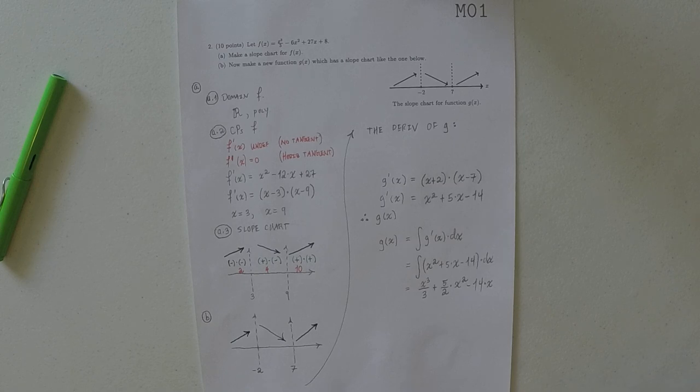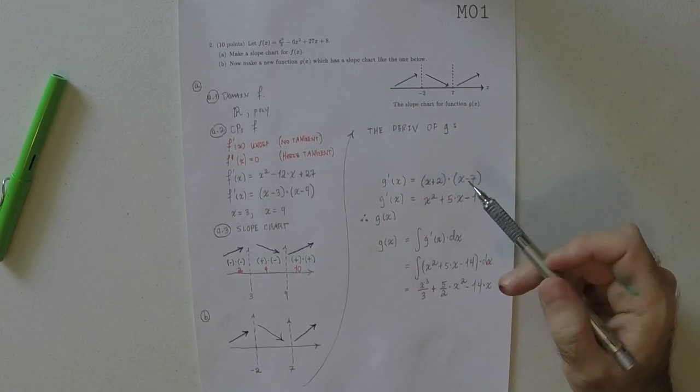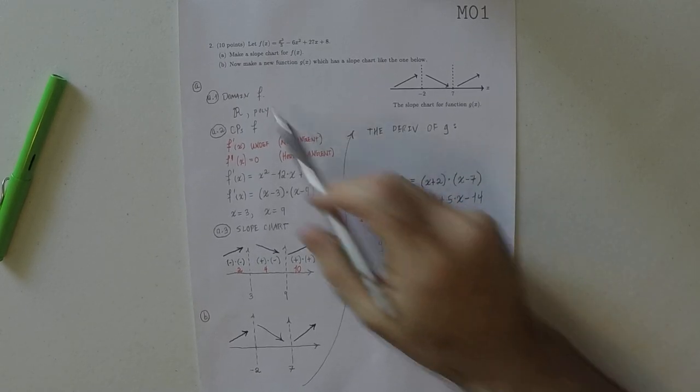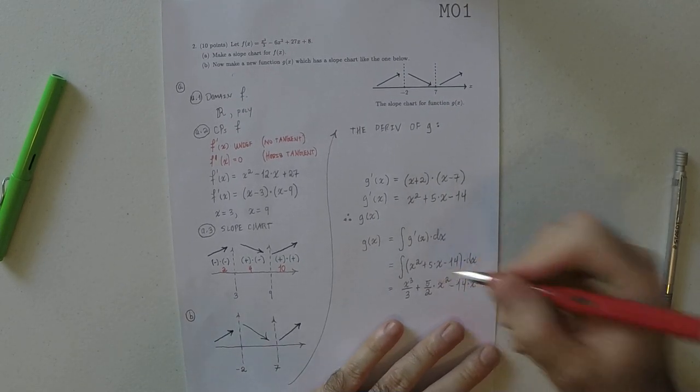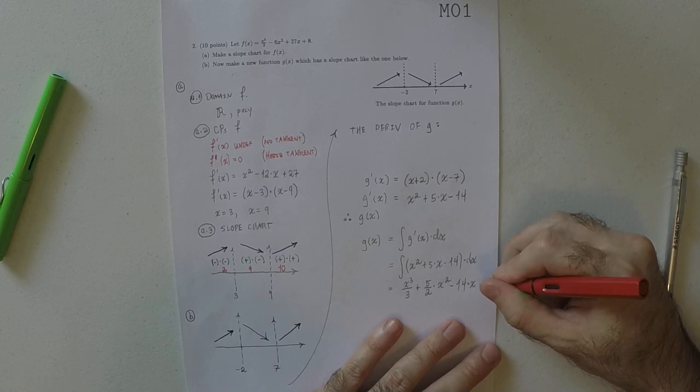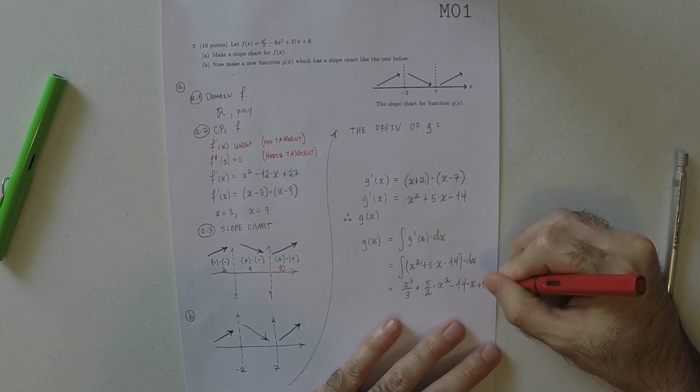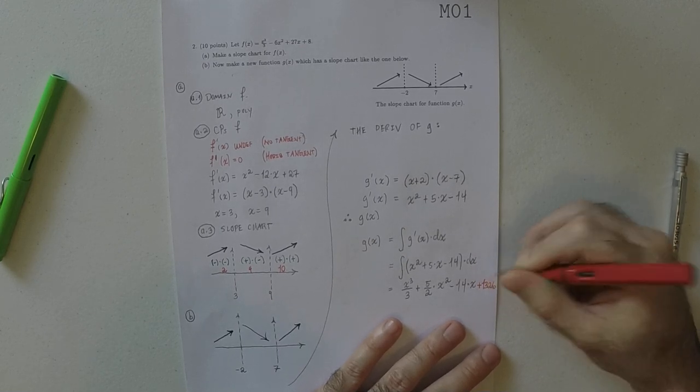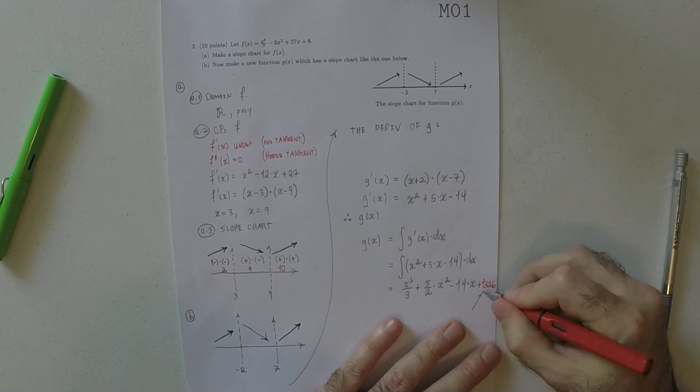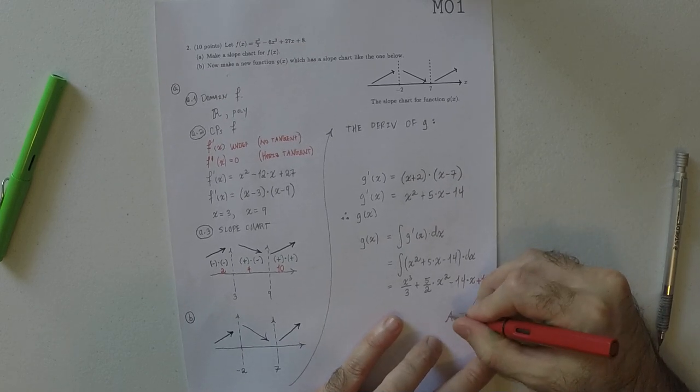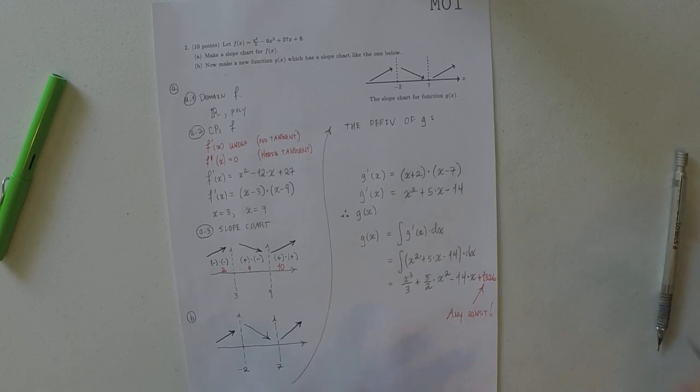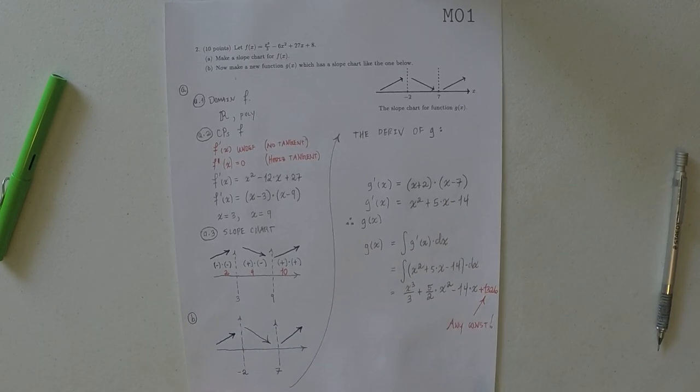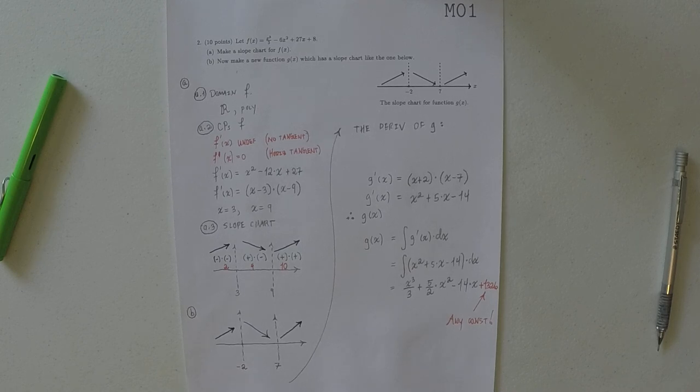So, that would be x cubed over 3 plus 5 halves x squared minus 14x. And, you know, because we're supposed to come up with any new function, that means that we can select any constant that we want. So, I'll select the constant 1326. So, any constant. Because we're just supposed to come up with any g whatsoever. So, that's it. Here we go.